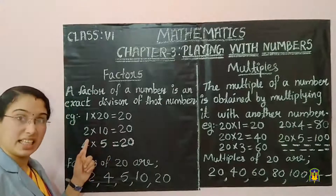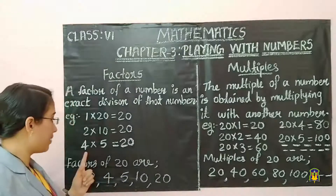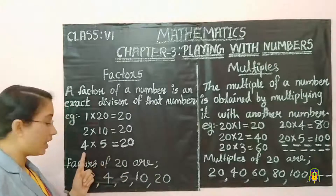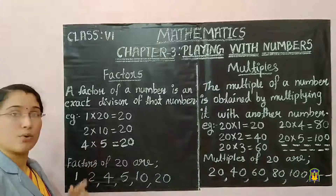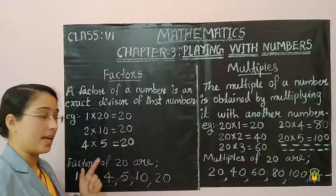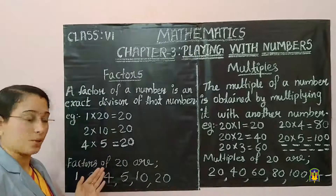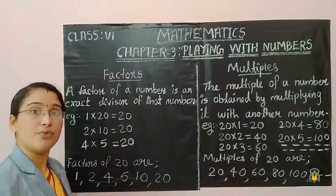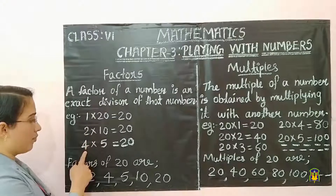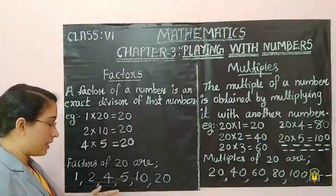If you are taking 3, it will not give remainder 0, so 3 is not a factor of 20. Next, take 4 — 4 into 5 gives 20. Then 5 into 4 also gives 20. Whenever the numbers are repeating, you can stop the process. So the factors of 20 are 1, 2, 4, 5, 10, and 20.